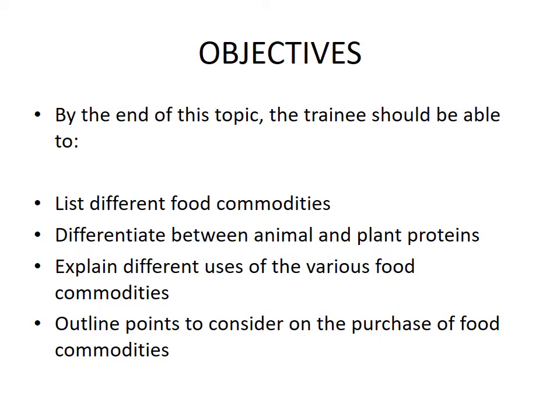Today's objectives: by the end of this topic, the learner should be able to: one, list different food commodities; two, differentiate between animal and plant proteins; three, explain different uses of various food commodities; and four, outline points to consider on the purchase of food commodities.